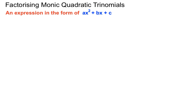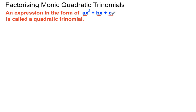Factorising monic quadratic trinomials. An algebraic expression is often in the form ax squared plus bx plus c — some number in front of an x squared, another number in front of an x, and then another number on its own. When it's in that form, we call it a quadratic trinomial. We call it a trinomial because there are three terms, and we're going to factorise it into two sets of brackets with four terms altogether — that's where we get the 'quad' bit, meaning four.